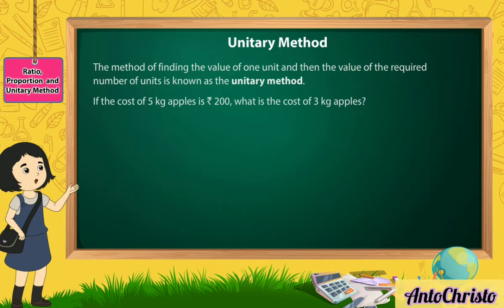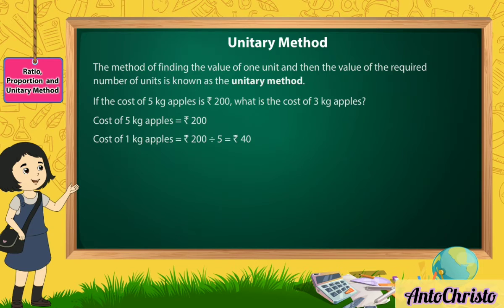Here, we first need to find the cost of 1 kg apple and then the cost of 3 kg apples. Cost of 5 kg apples is equal to Rs 200. Cost of 1 kg apples is equal to Rs 200 divided by 5, which is equal to Rs 40.